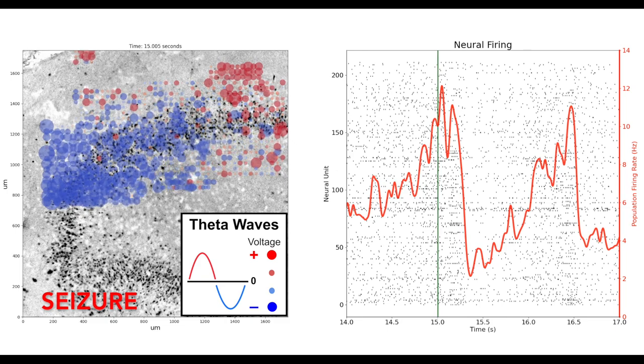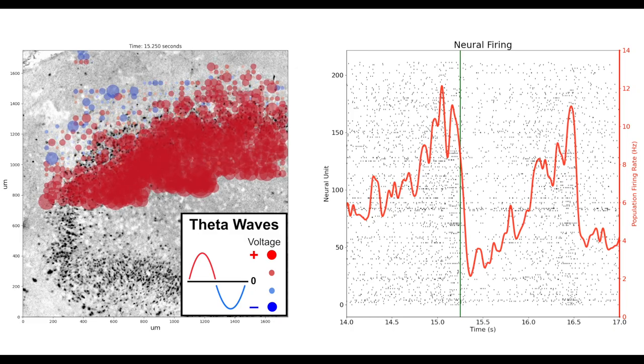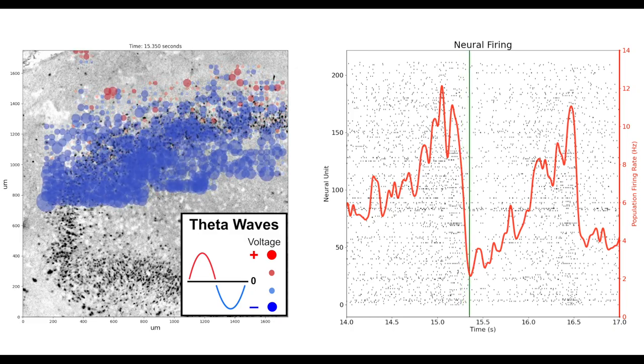This transitions into a rolling wave moving orthogonally to the initiation stage. The rolling wave continues for the rest of the seizure-like event.